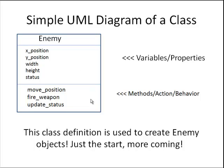Again, this is information that describes the object. And finally in the lower box you will see the move position, fire weapon, and update status methods. These are the actions an enemy object will perform. Now this is just a start — more will be added as we progress.